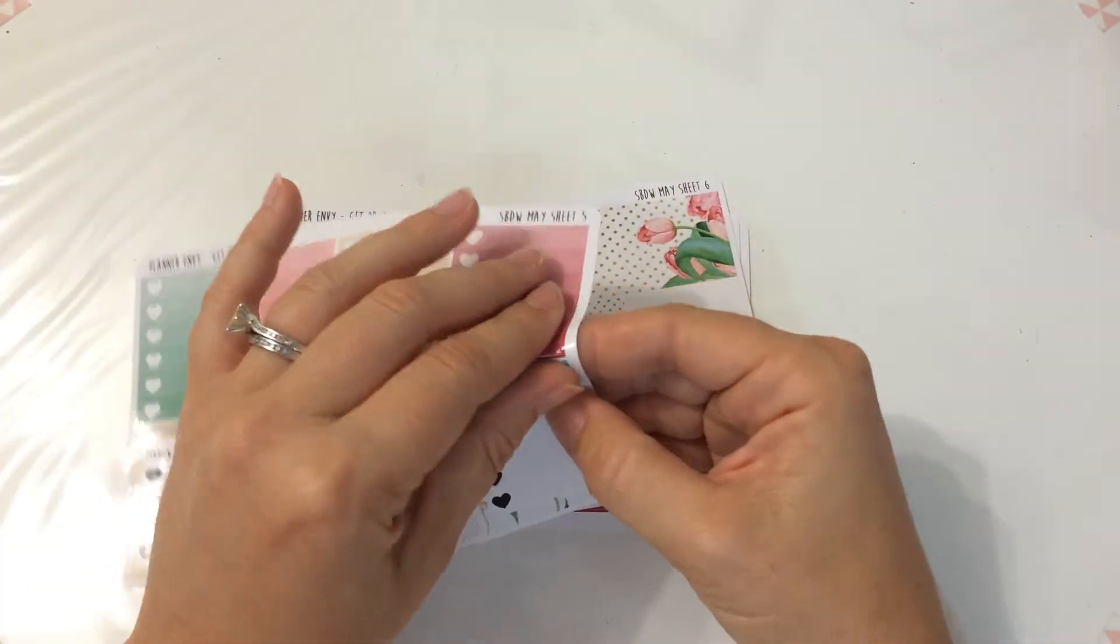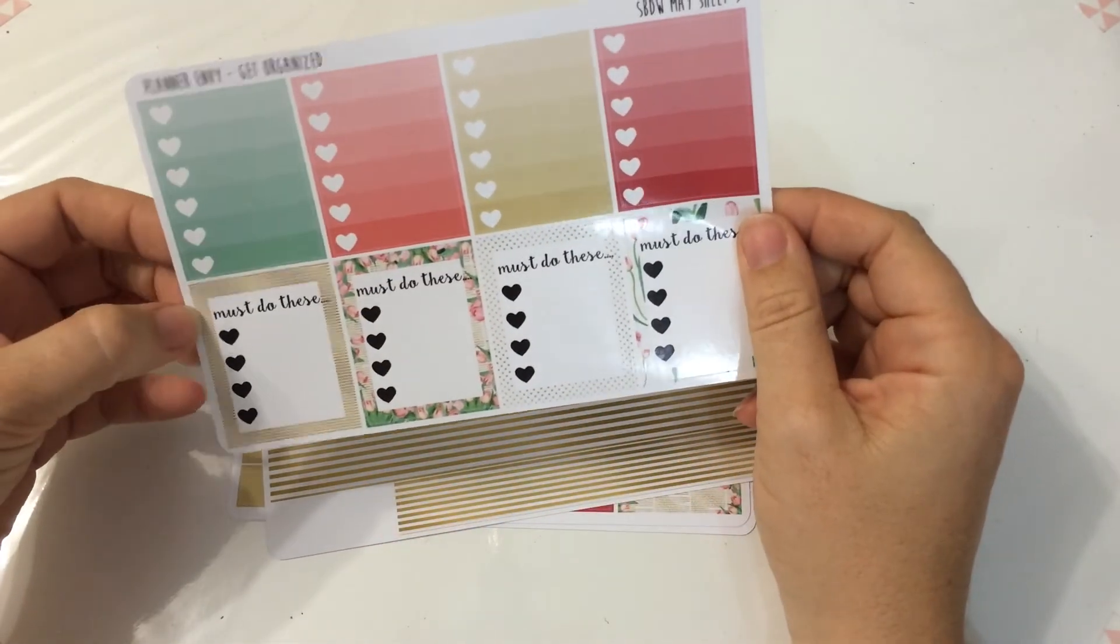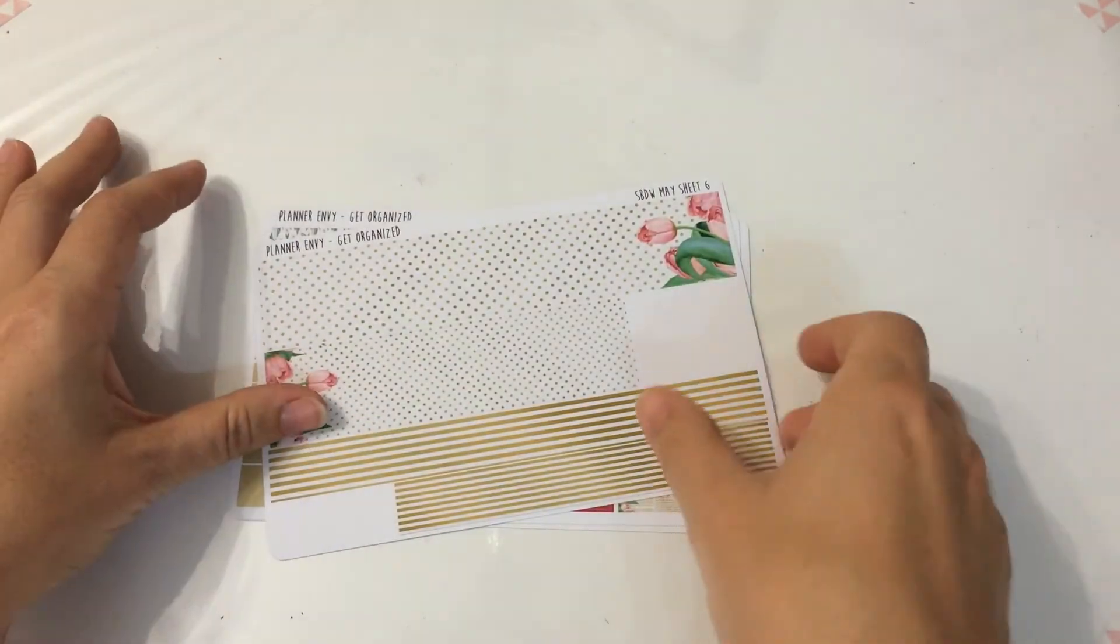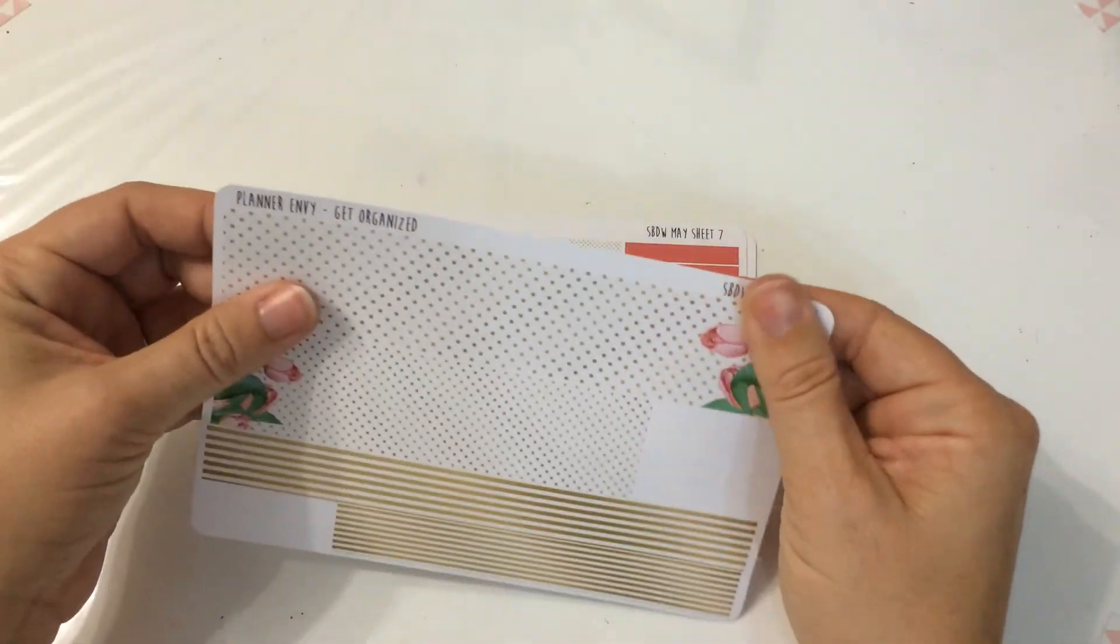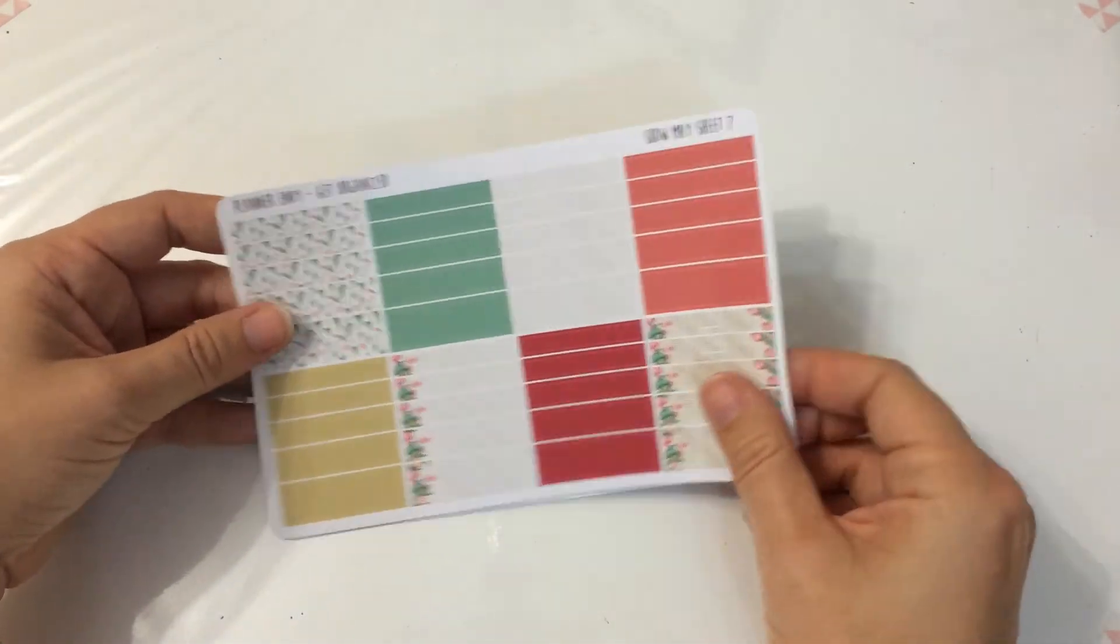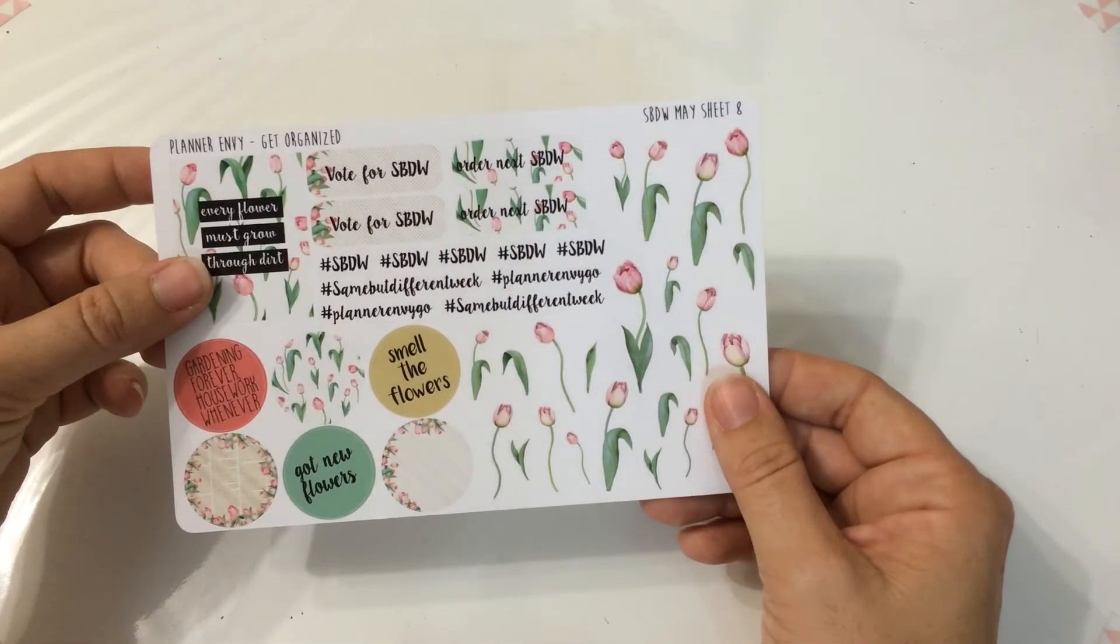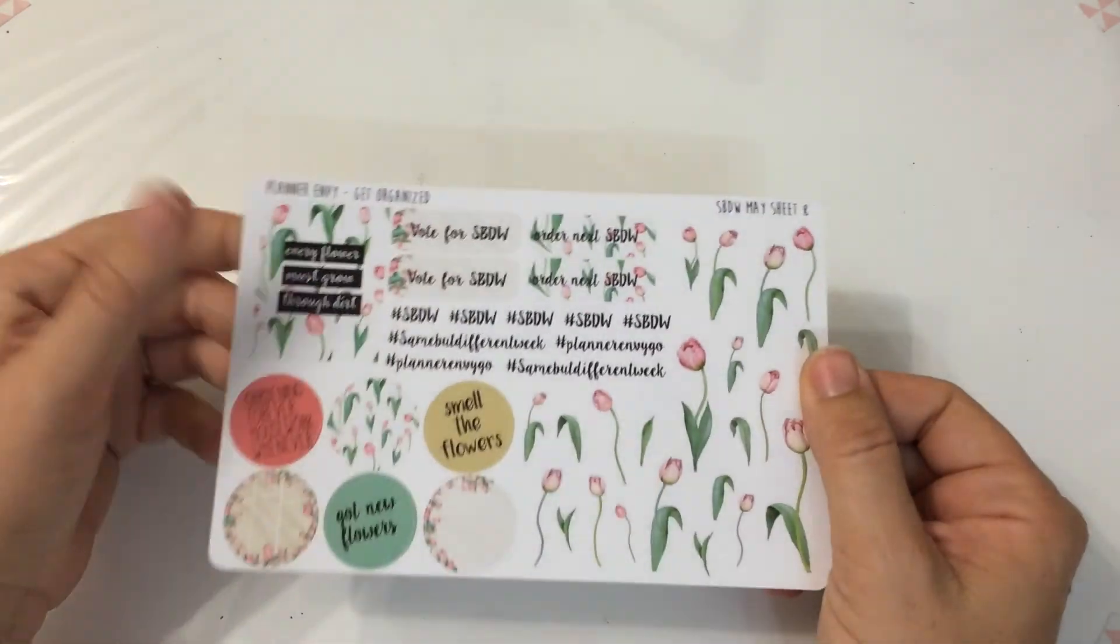And heart checklists. And these I don't actually have any of these. These are cute. Must do. These things I'd actually maybe use these more than I would use these. They're a bit shorter. The washi sheet. I got the luxe kit, it's like the biggest kit. It's got everything just cause I like to have choices. The washi sheets and this decorative sheet. It's really cute. It's got like some hashtag stuff, some notes to order the next same but different week stickers, and circles, and heaps of tulips. Really pretty.